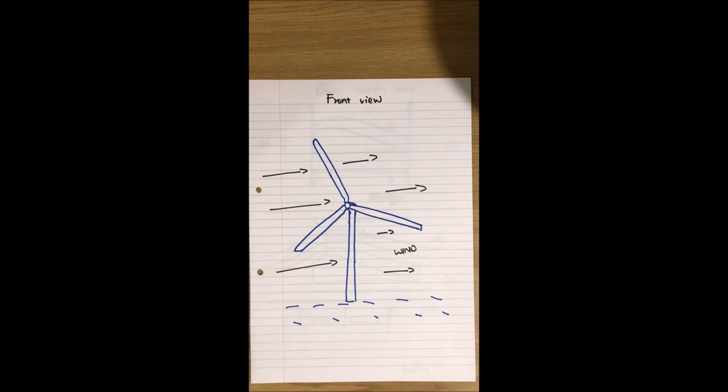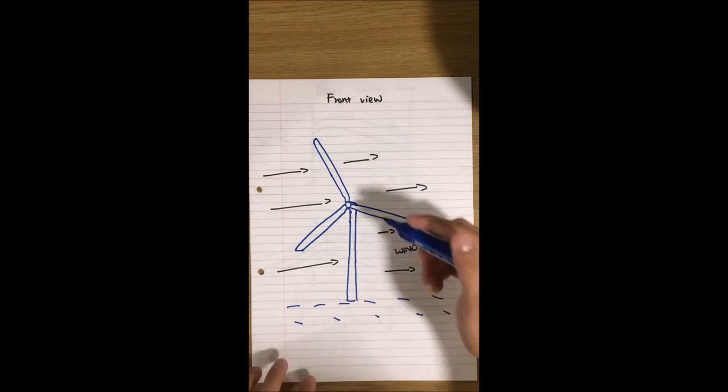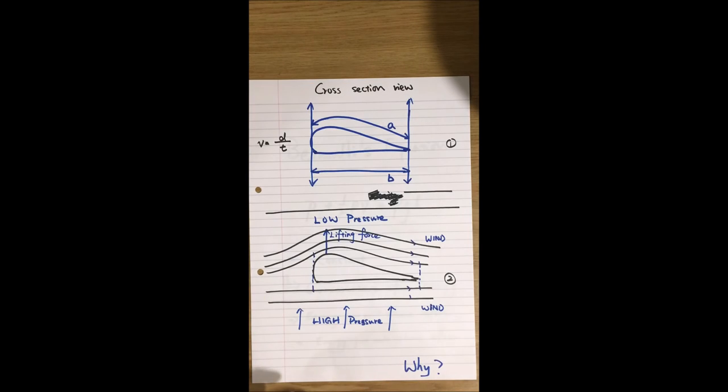Here comes the first question: Why does turbine spin when wind comes? To explain this, we need to understand what is an airfoil design and how does it work. Background 1 shows the cross-section view of the turbine blade, and A and B represent the path of air, and it is clear that A has a longer distance than B, but the air traverses both paths in the same amount of time.